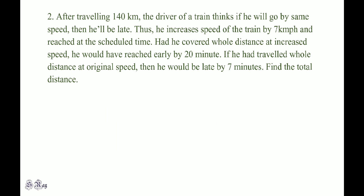After travelling 140 km, the driver of a train thinks that if he continues at the same speed he will be late, so he increases speed by 7 km/h and reaches on schedule. Had he covered the whole distance at the increased speed, he would have arrived 20 minutes early. Had he travelled all distance at original speed, he would have been 7 minutes late. Find the total distance. The answer is 189 km.